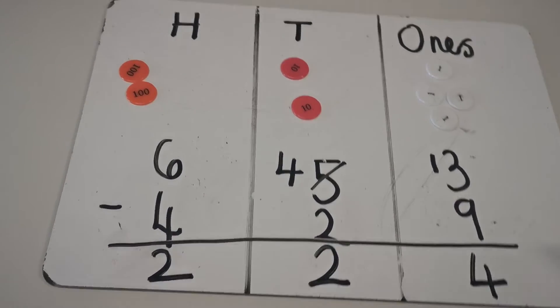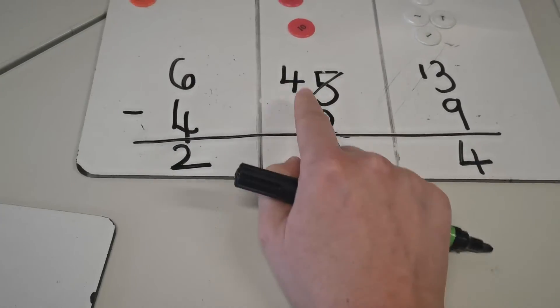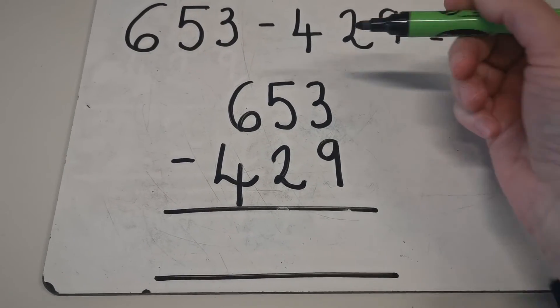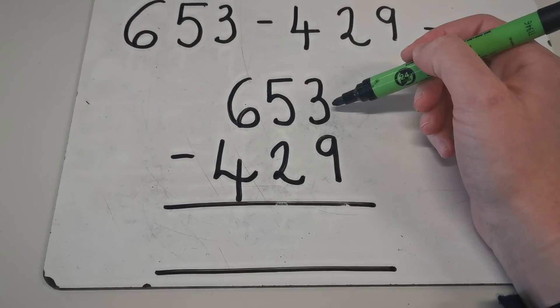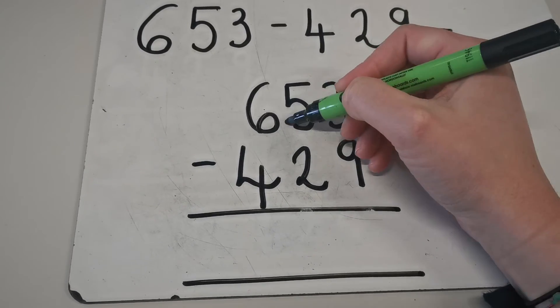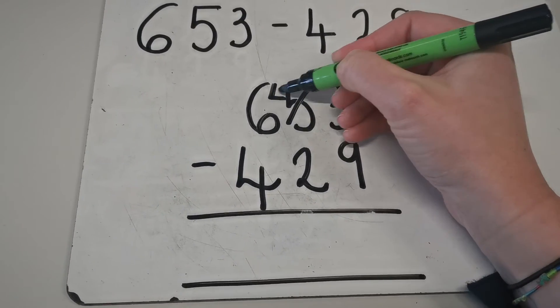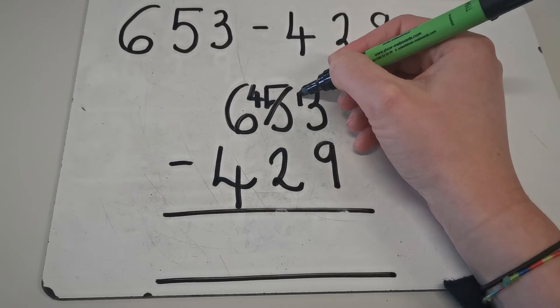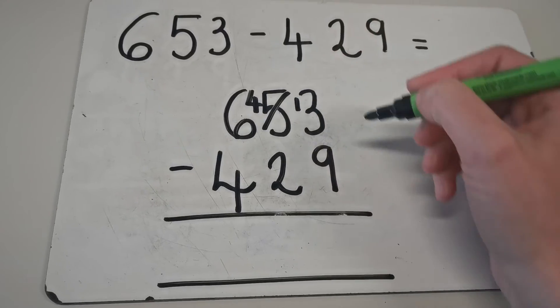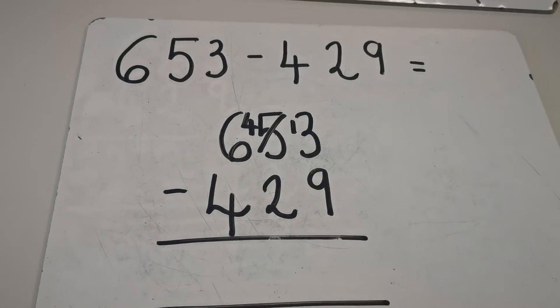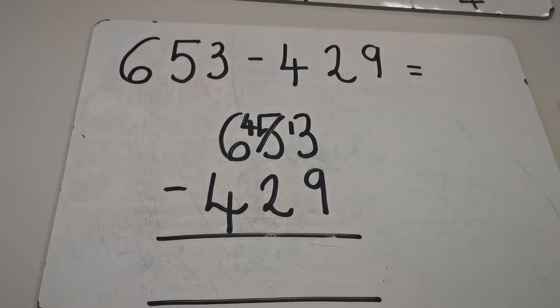Now I'm going to show you the written method again and see if we come up with the same answer. I did do the written method at the bottom here, but I'm just going to show you again how it looked. So we don't have enough ones to subtract 9 because we've only got 3. So we're going to take one of those tens and exchange it for 10 ones. The 10 ones becomes a 10 and we put 1 ten up there and 3 ones. So we've got 13 now, subtract 9. We can do that because 13 is bigger than 9.